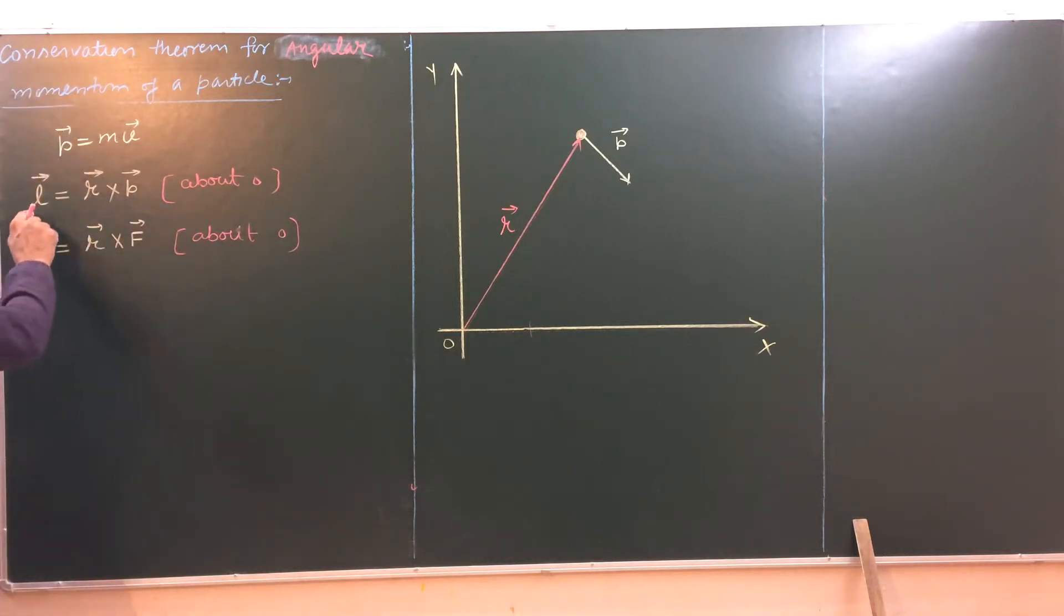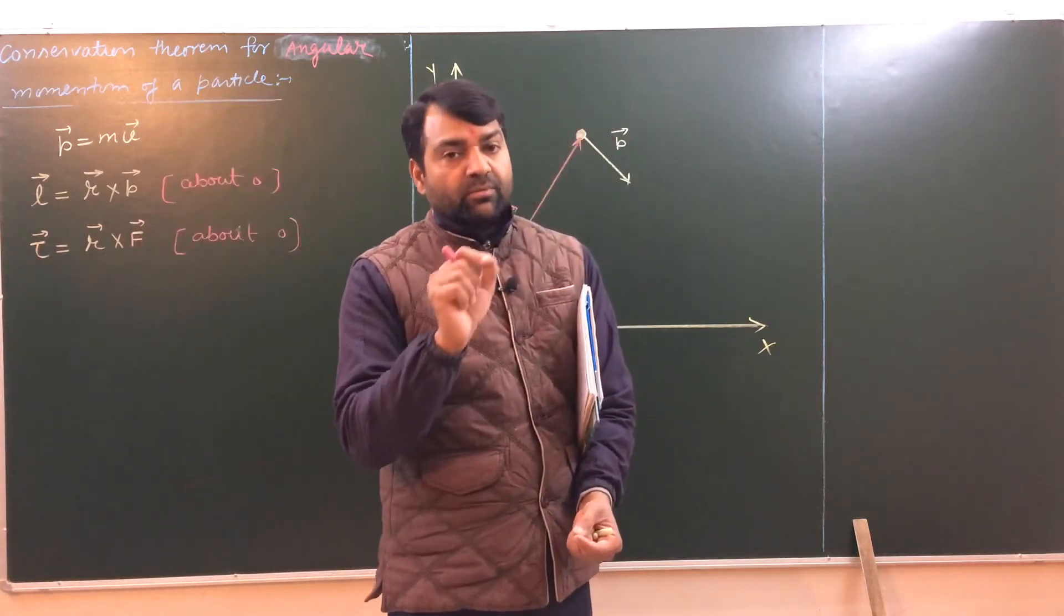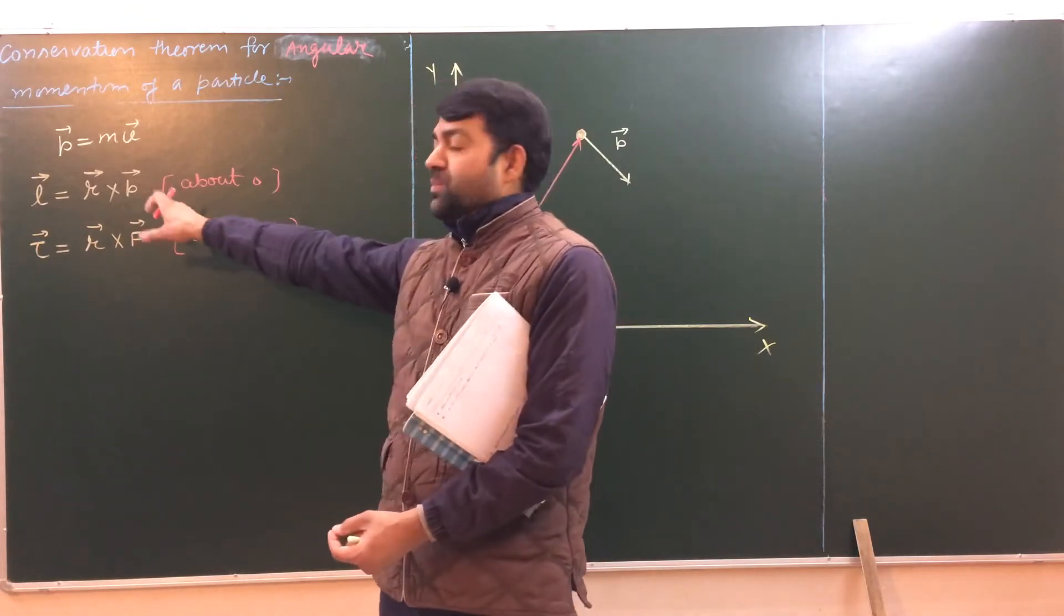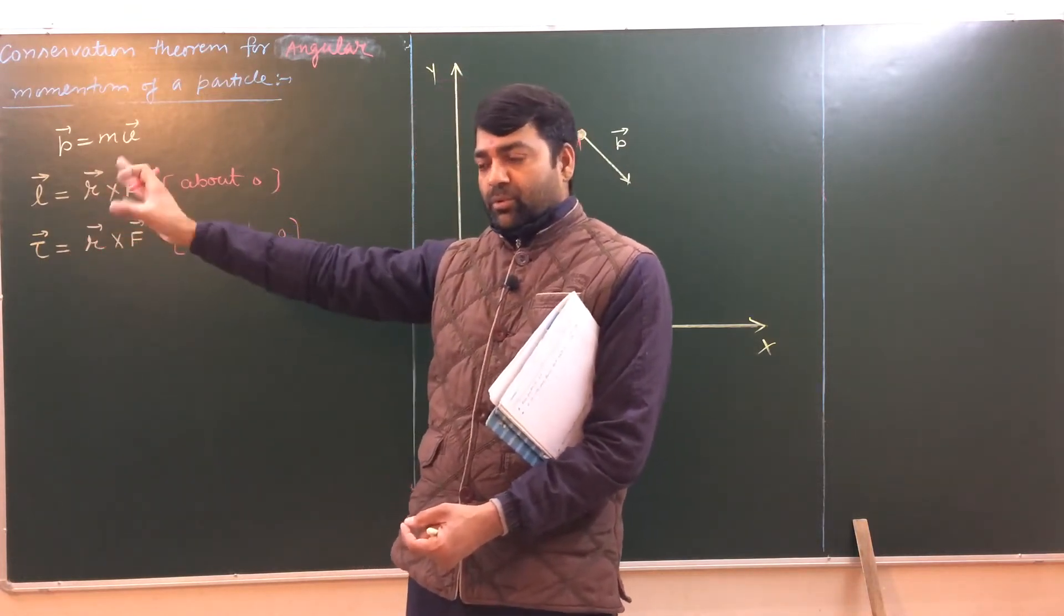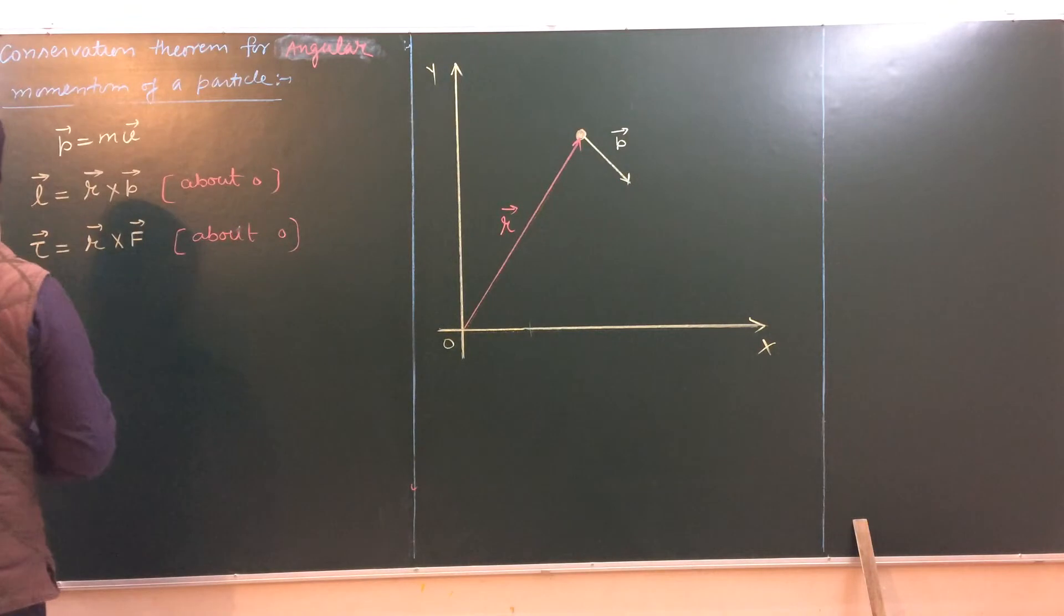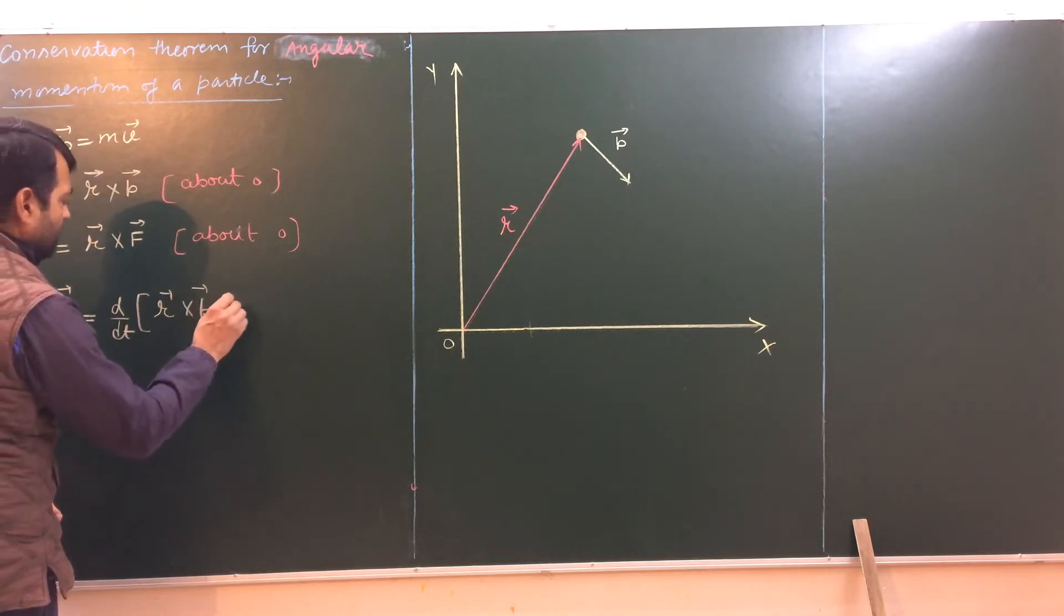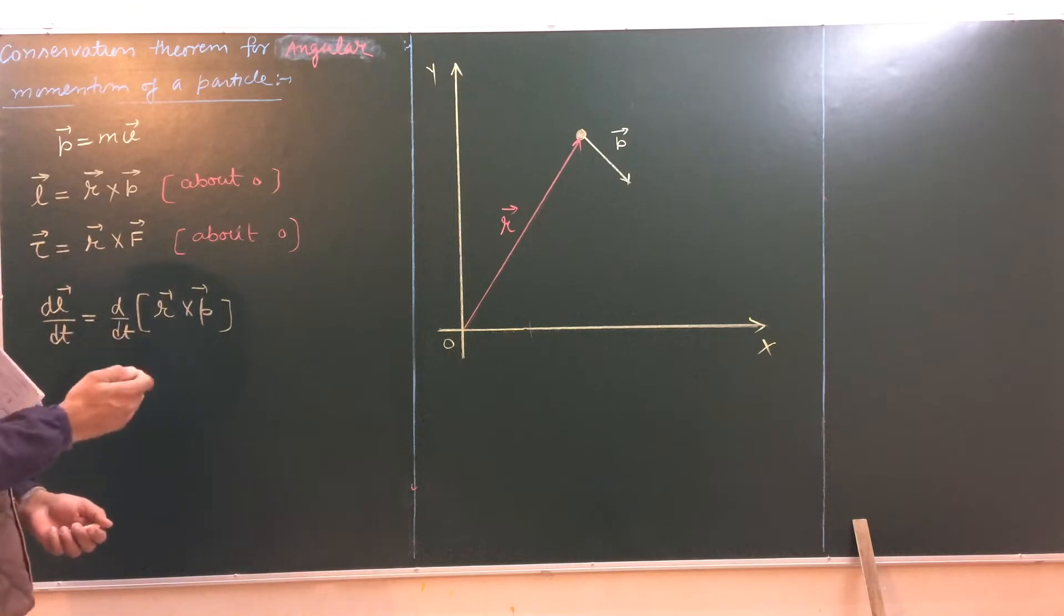Let us differentiate this expression with respect to time. One most important point which we have to mention here is the order of cross product is important. We cannot say it is p cross r, it is r cross p, because the cross product of two vectors is always anti-commutative. Now, differentiating this expression with respect to time, I will get dL by dt, that is the rate of change of angular momentum, is d by dt of r cross p. Now we have to apply the product rule of differentiation with preserving the order of r and p.